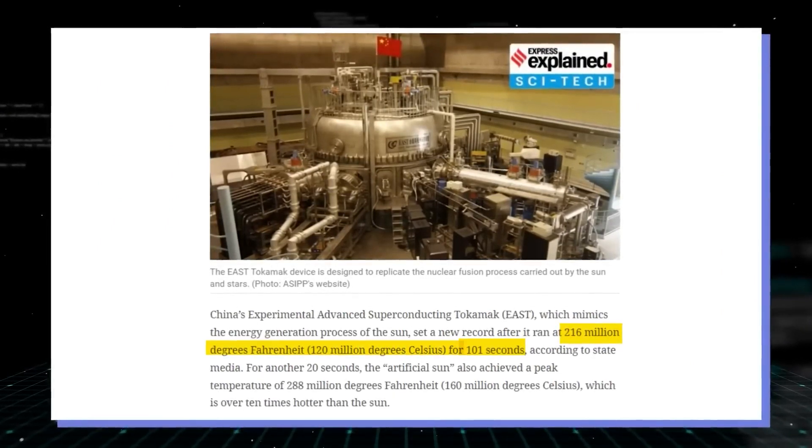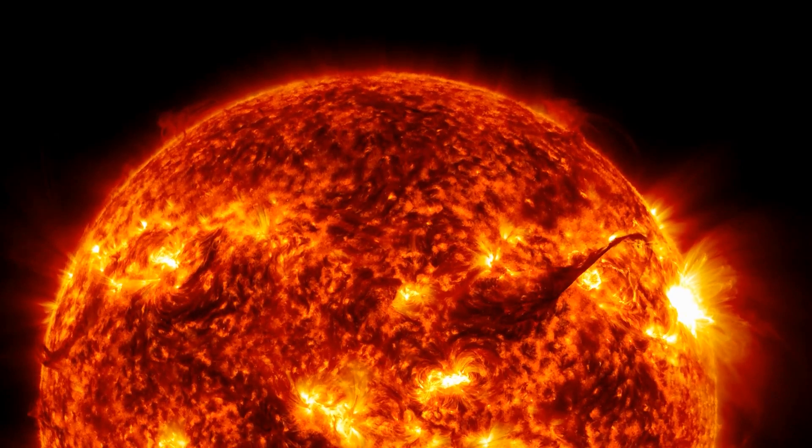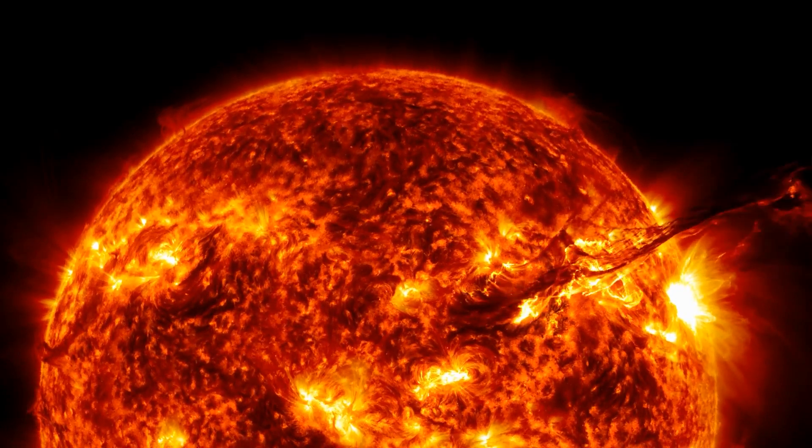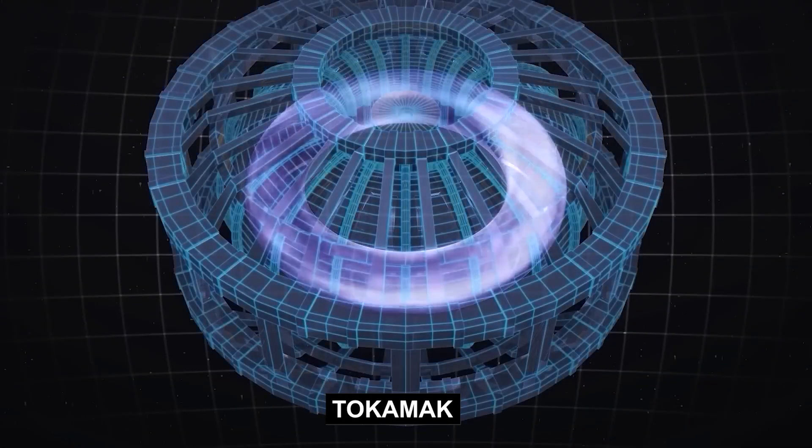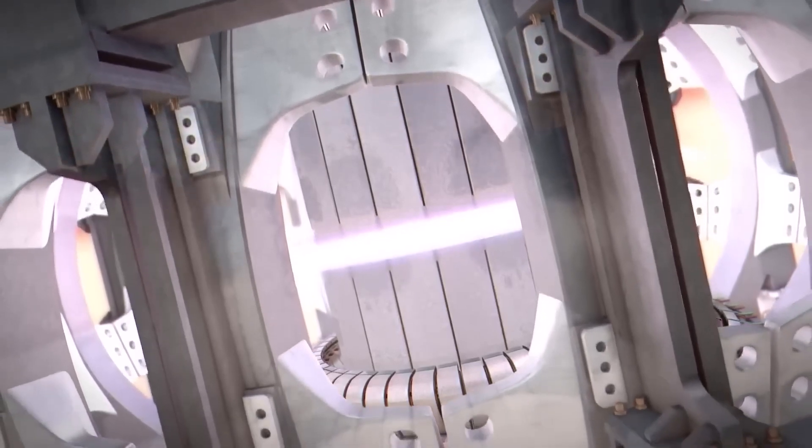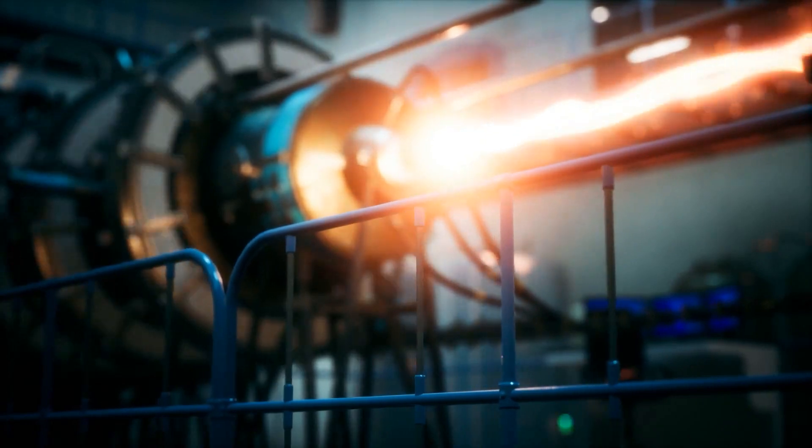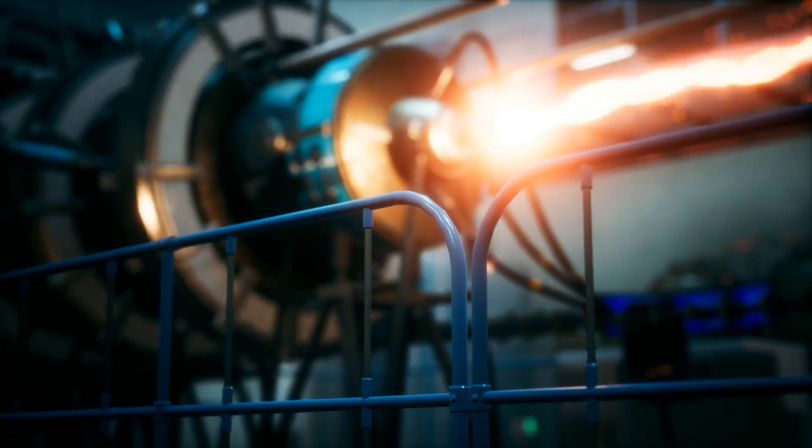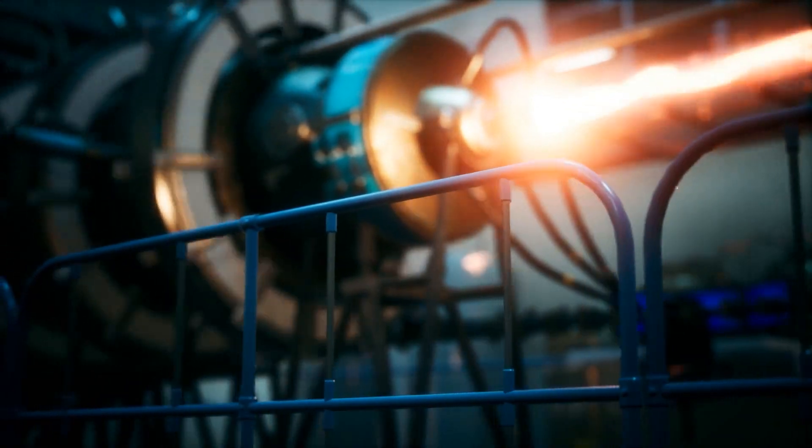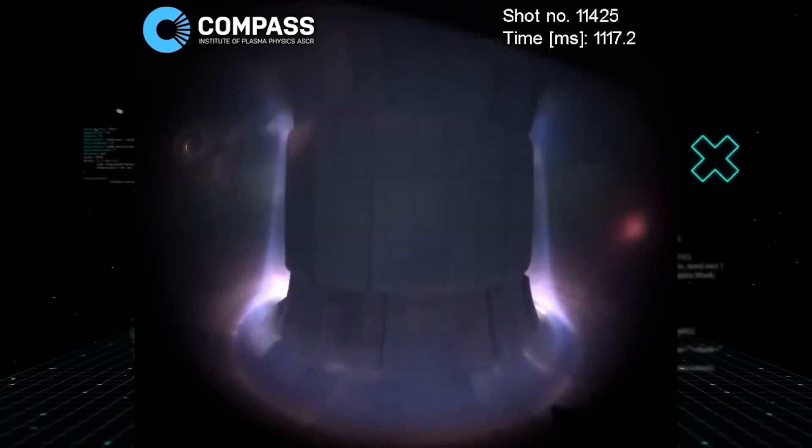Replicating the immense energy of the Sun and other formidable stars presents a formidable challenge, as it entails recreating the intricate conditions found within the celestial bodies. EAST employs a Tokamak configuration, which is a machine employing magnetic fields to enclose plasma in a torus-shaped structure known as a donut. Advocates of fusion energy assert that the Tokamak represents the foremost concept for confining plasma in future fusion power plants. With a Tokamak, magnetic coils serve to confine plasma particles, enabling the plasma to reach the requisite conditions for fusion.